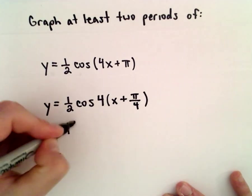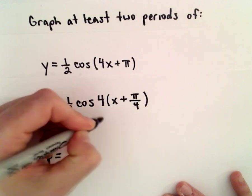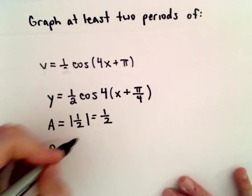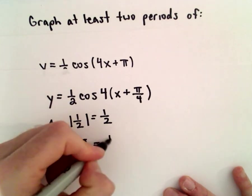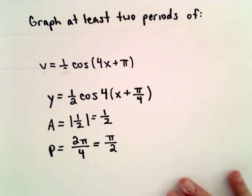So the amplitude, that's just the absolute value of one-half, well, that's one-half, easy enough. The period will be 2 pi over 4, or pi over 2, when we simplify that.